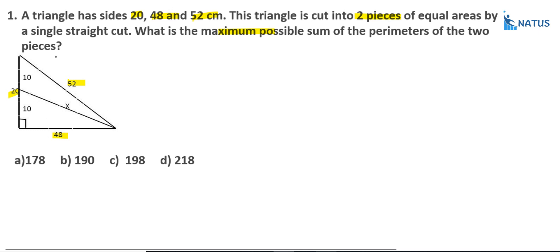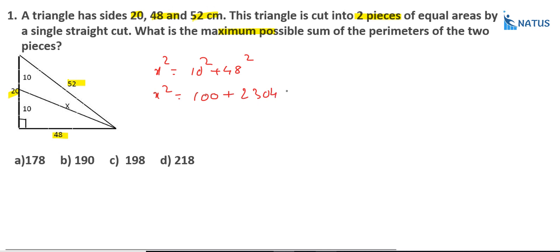To find the perimeter, we must know the value of x. Here, this length is equal to 10 and this length is also equal to 10. This is a right-angle triangle where one side equals 10, the other side equals 48, and x is the hypotenuse. So x² = 10² + 48² = 100 + 2304 = 2404, and x = √2404 = 49.